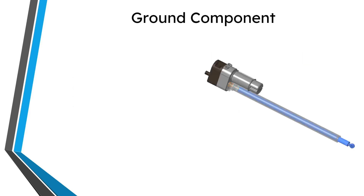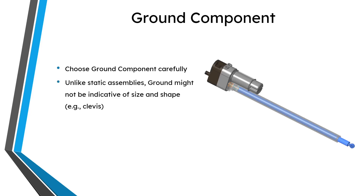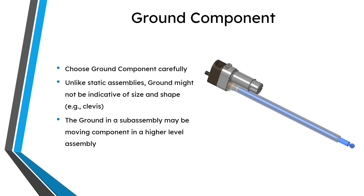There are a number of ways to build design intent when creating assemblies with moving components, which we refer to as mechanisms. The first method is by choosing your ground component carefully. Changes to that ground component will usually ripple through to many of the other components in your mechanism. Unlike a static assembly, instead of picking something indicative of the size and shape of your model, you might end up picking something relatively small or seemingly insignificant — for example, just a small clevis as the ground component. Also, what you use as the ground component in a subassembly might actually be a moving component in another assembly.